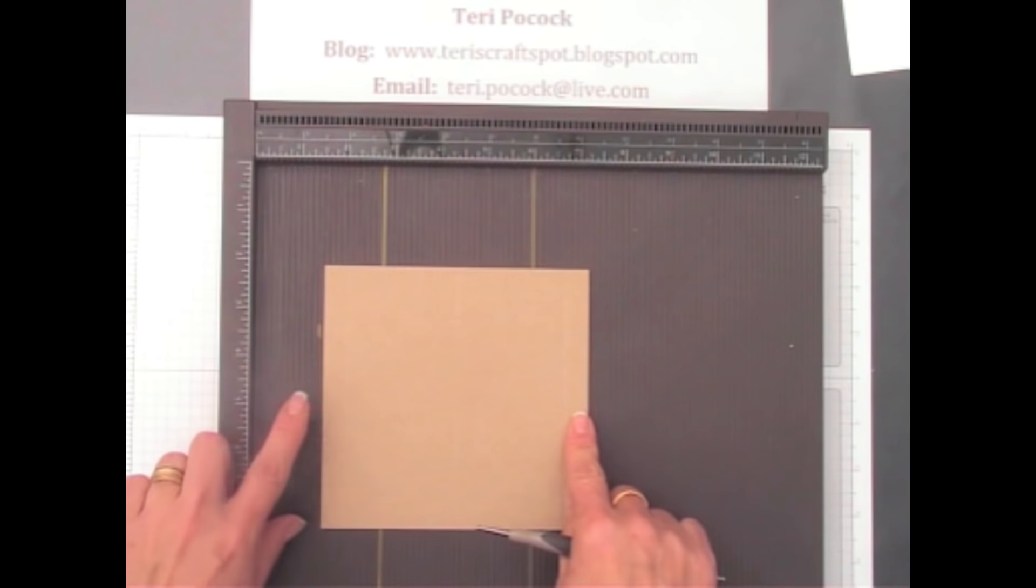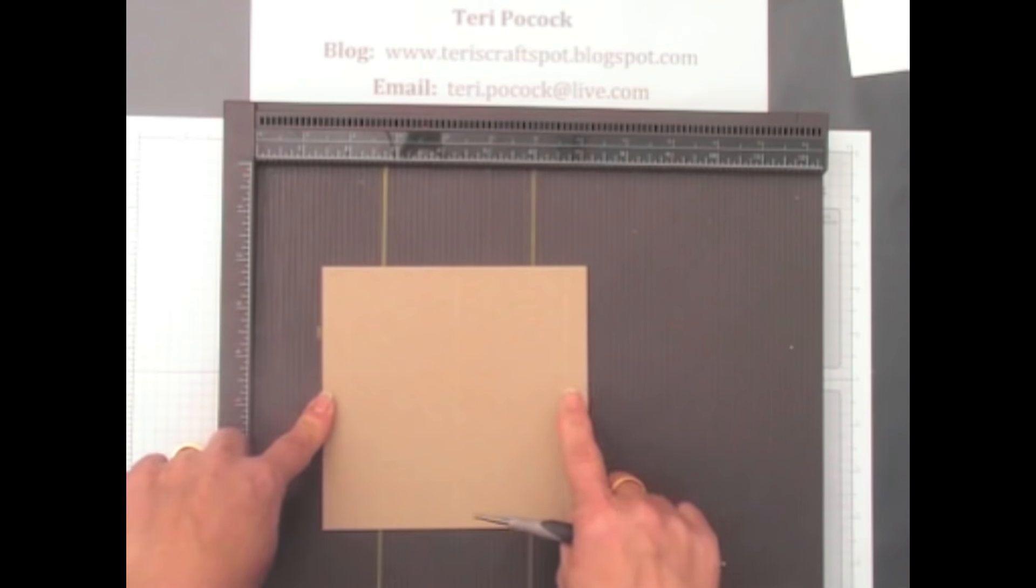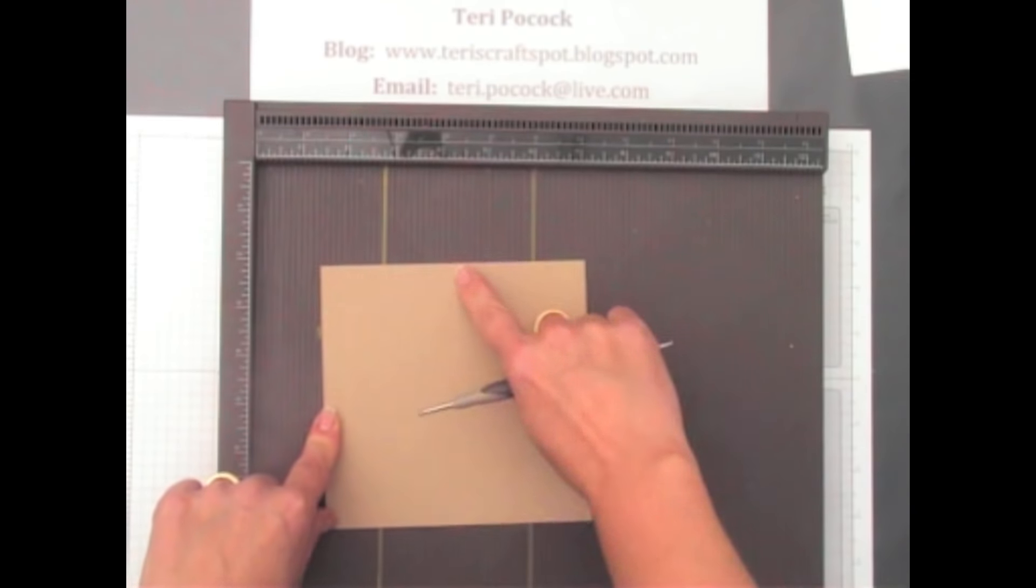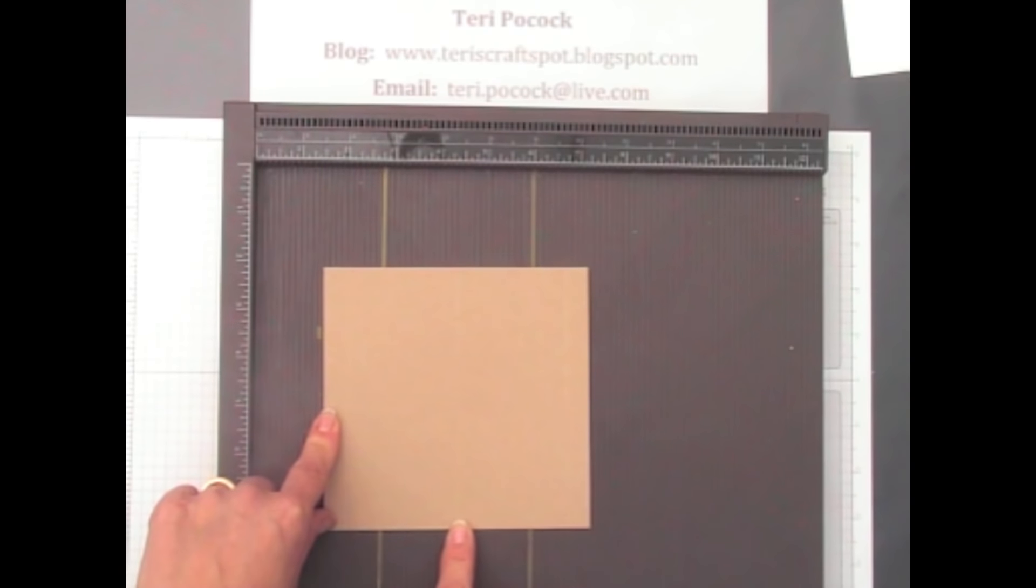So now what we've got, we've got a half inch section on each side and we've got a score line going through the middle of our cardstock.